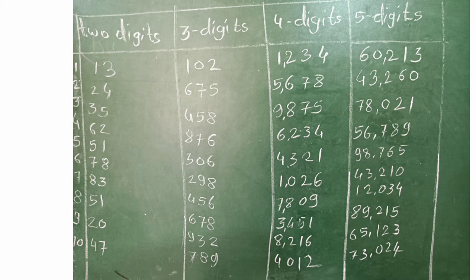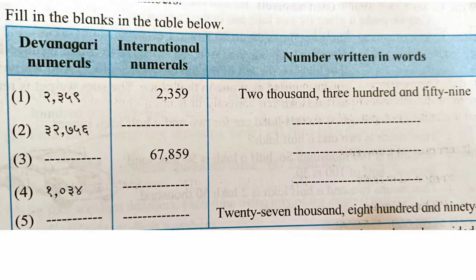With the same process, prepare three-digit, four-digit, and five-digit numbers — do not repeat any digit within one number. For example, 102 is one hundred and two; 675 is six hundred and seventy-five. Similarly, take different digits to make four-digit and five-digit numbers. The second question is: fill in the blanks in the table below.